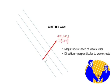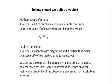So, in summary, how do we define a vector? Mathematically, we define it by the way it transforms under a coordinate rotation. And we'll go into that elsewhere. But this rather abstract definition exists for a very practical reason. It follows from the requirement that the quantity has its own identity that is independent of the method used to measure it. Vectors are an example of a more general class of mathematical objects called tensors. Every quantity that describes physical reality independent of the observer is expressed most usefully as a tensor. We'll look at tensors in another video.